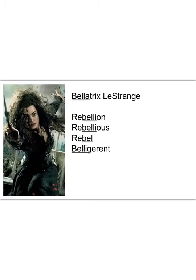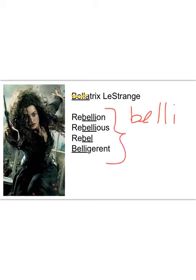The first character we'll look at is Bellatrix Lestrange — she's a bad character, part of the Death Eaters, evil, and on the side of Lord Voldemort. Her name, Bellatrix, has the Latin root 'belli,' typically spelled B-E-L-L-I. That root is found in words like 'rebellion,' 'rebellious,' 'rebel,' and 'belligerent' — all sharing the core meaning of to fight and to be warlike.